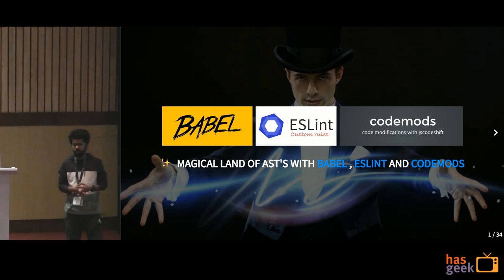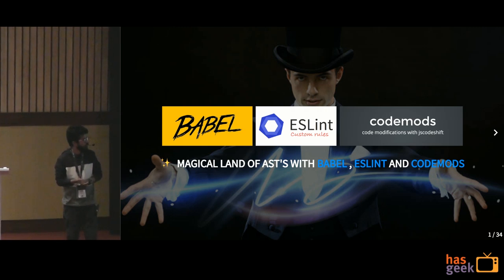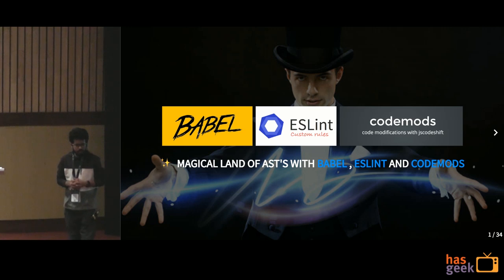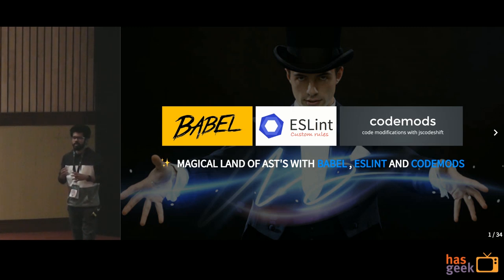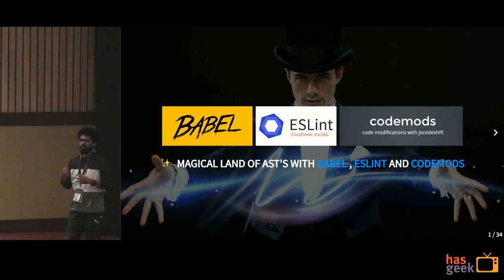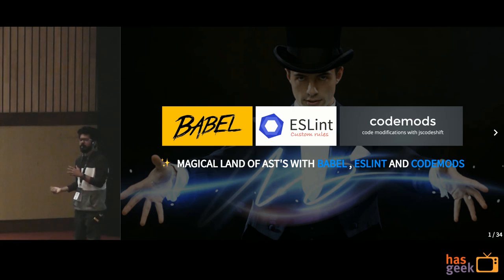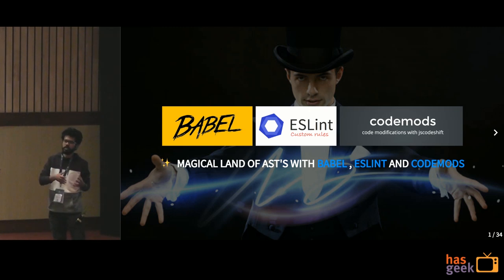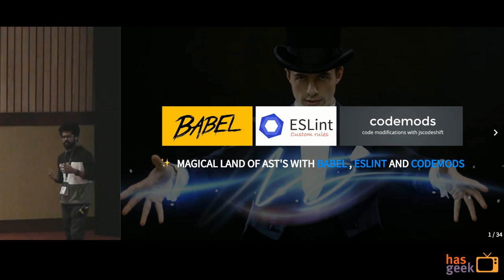I'm really honored to be speaking for ReactFu. The topic I'm going to talk about is a very fancy topic — the magical land of ASTs, with Babel, ESLint, and CodeMods. The purpose of this name: when I initially started coding in React or JavaScript, Babel and ESLint looked really magical to me. Things were getting auto-corrected, Prettier was auto-indenting my code, and I didn't have to do much because this was all magically happening behind the scenes.